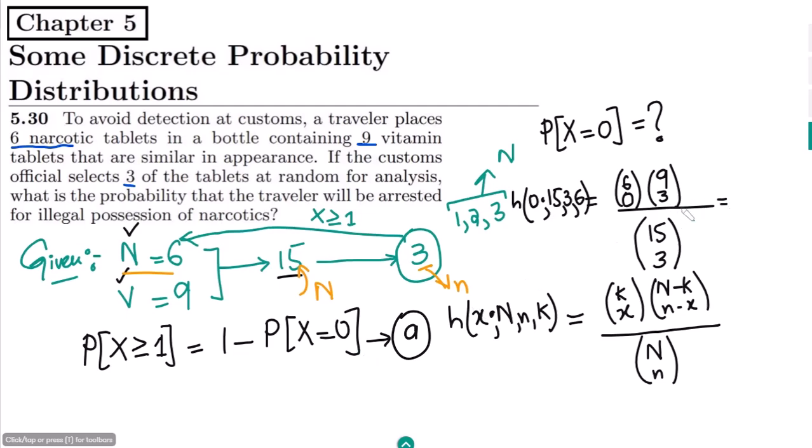When it will be calculated, the output of it, what we will get from here, it would be 84 divided by 455. Or simplifying them, we will get 12 divided by 65.